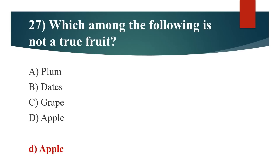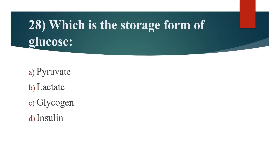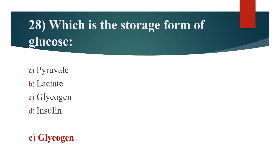28th question: Which is a storage form of glucose? Option A: Pyruvate. Option B: Lactate. Option C: Glycogen. Option D: Insulin. Answer is Option C: Glycogen.